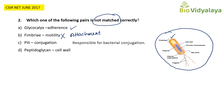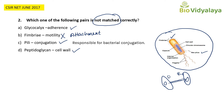Pili are responsible for bacterial conjugation — the donor bacteria extends pili to the recipient bacteria, forming a bridge-like structure through which DNA transfers from donor to recipient. So pili-conjugation is a correct pair. Peptidoglycan-cell wall is also correct, as peptidoglycan is present in the cell wall of bacteria. Therefore, the correct answer for the mismatched pair is option B: fimbriae — motility.